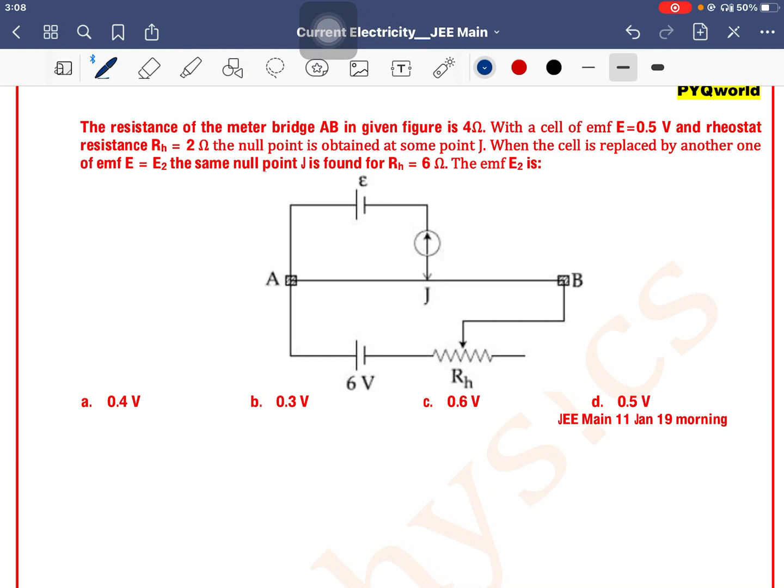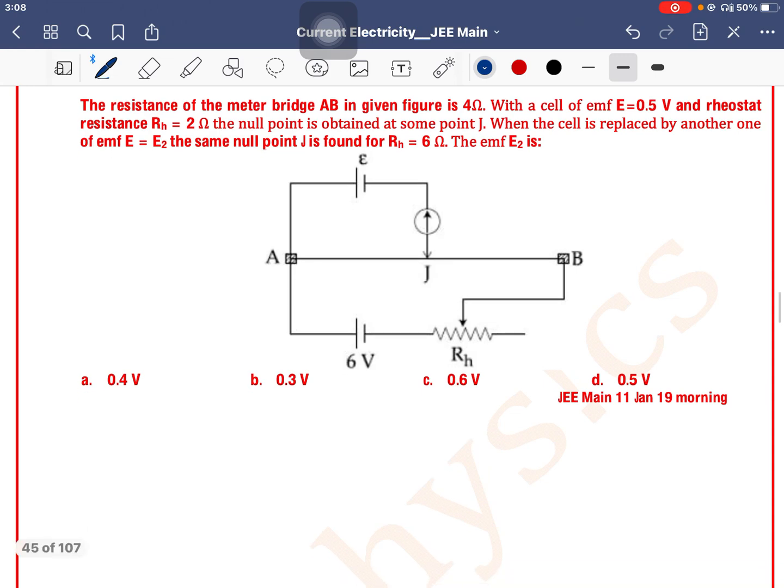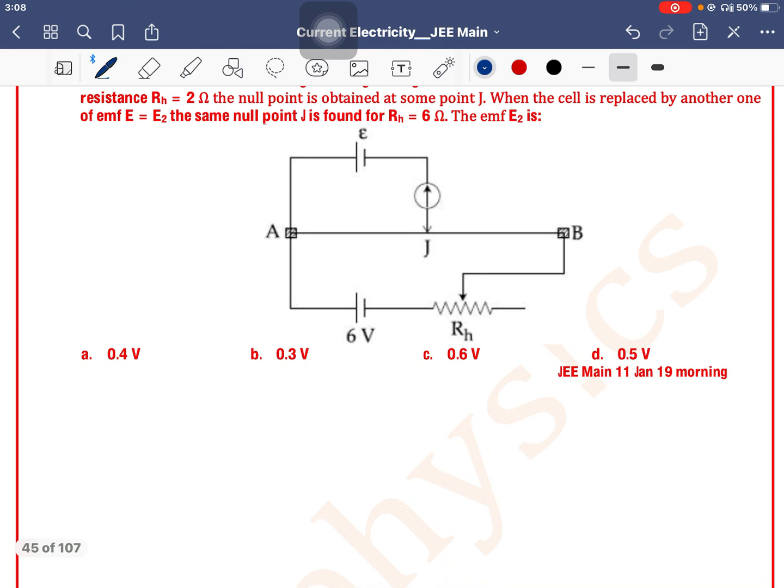Okay, so here we can see in both cases the null point is same. We can see in the first case, the null point J is equal to E divided by R plus RH into R divided by L.